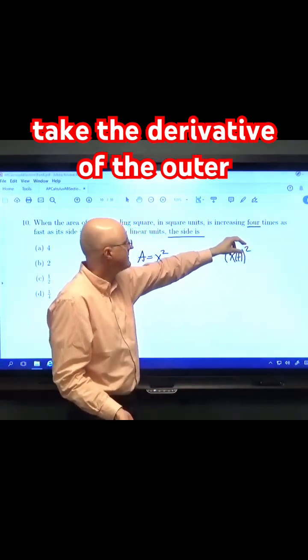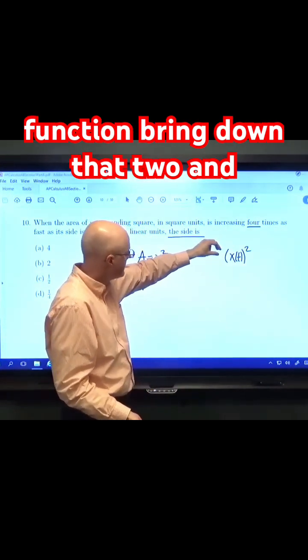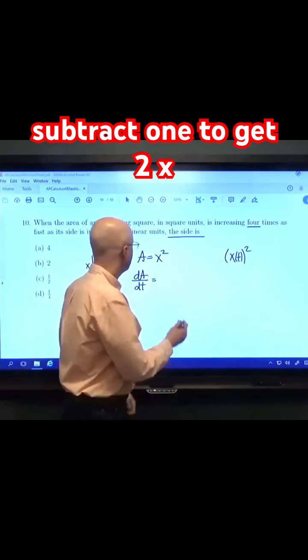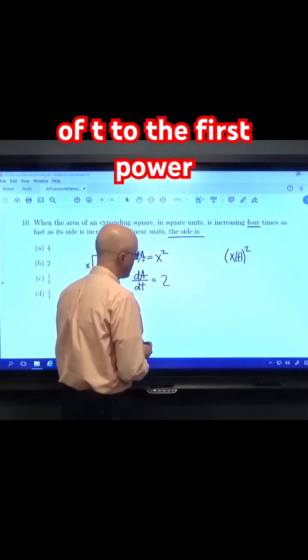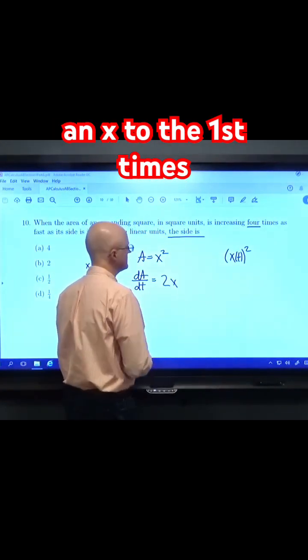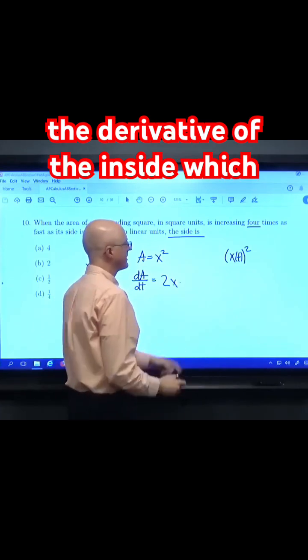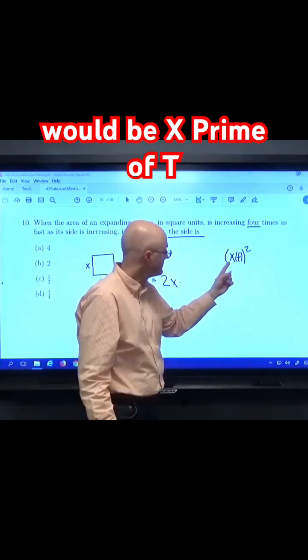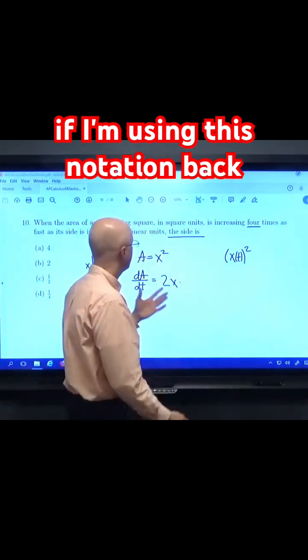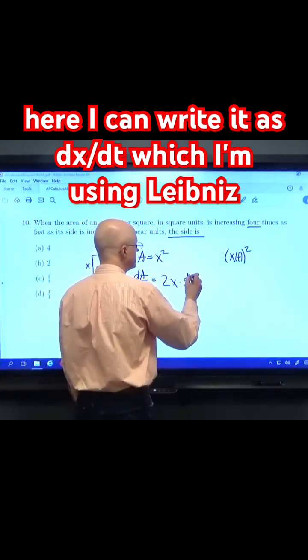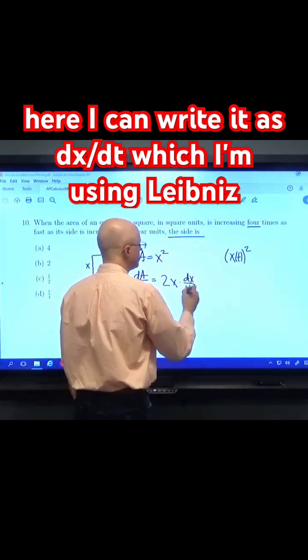The chain rule would say take the derivative of the outer function, bring down that two and subtract one to get two x of t to the first power, but I'll just write it as x to the first, times the derivative of the inside, which would be x prime of t if I'm using this notation. Back here, I can write it as dx dt if I'm using Leibniz notation.